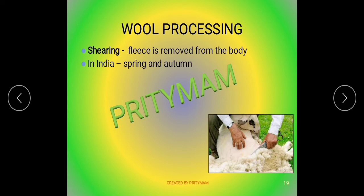The shearer must be careful. Shearing is done twice or thrice a year in India, and it is usually done in the spring season and in the autumn season, when the animal does not need the fleece to keep warm. This is the process of shearing which is going on.